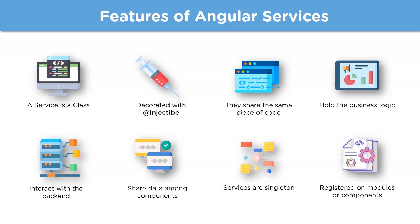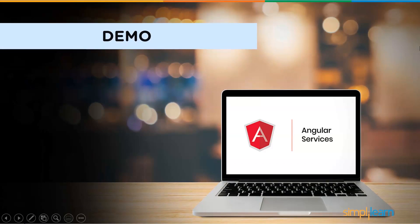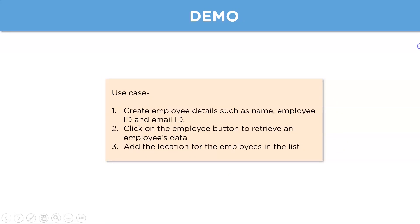The concept of services will be clearer with a demo. We'll create an employee details list with information like name, employee ID, and email ID. We'll create a database of three employees, and on the browser, when you click an employee button it displays the information about that particular employee. At the end, we can also add information to the employee details.